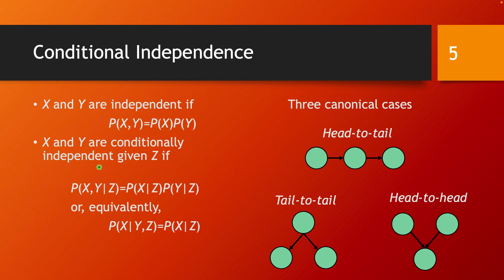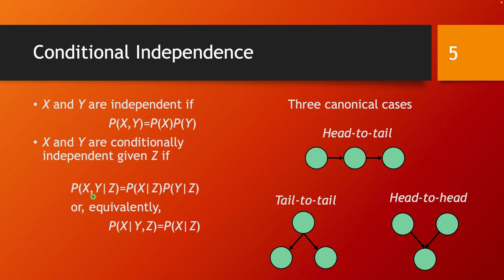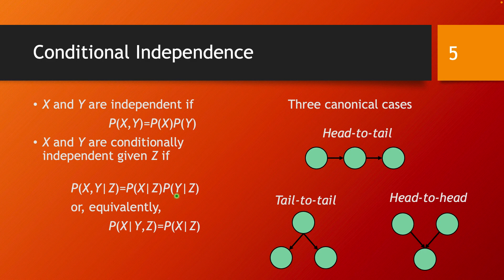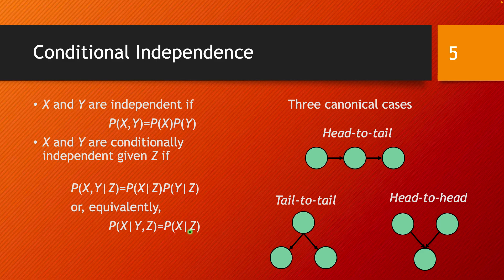We also say that x and y are conditionally independent given another event z if the joint probability of x, y given z is exactly the conditional probability of x given z times the conditional probability of y given z. Or equivalently, the probability of x given y and z is exactly the probability of x given only z.